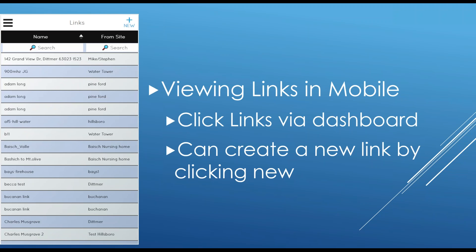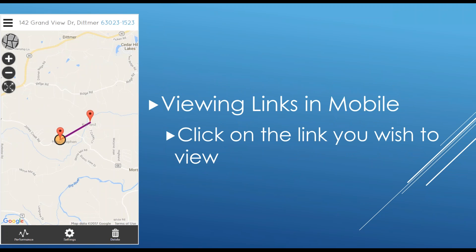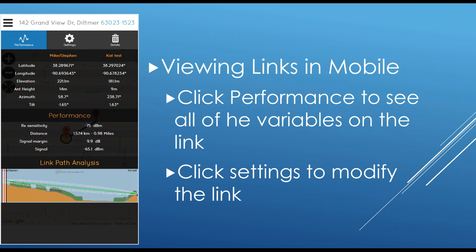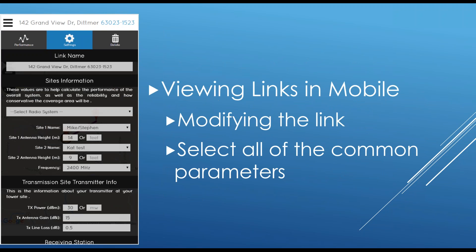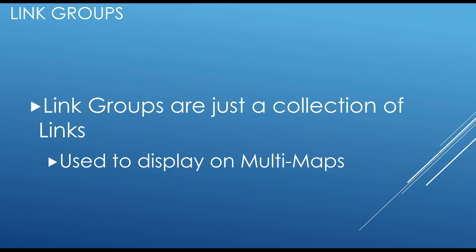Viewing links in the mobile dashboard is very similar — click Links, click on a link or click New. For an existing link on mobile, we don't have a side view due to screen real estate limitations. We have a performance button — clicking it gives you the link path analysis, side view, all performance details, and direction and azimuth tilt. We also have a settings button where you can modify information or delete the link.